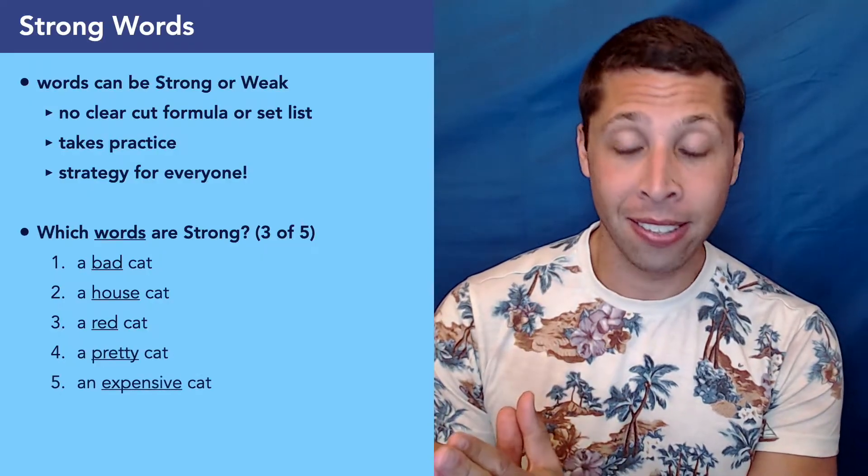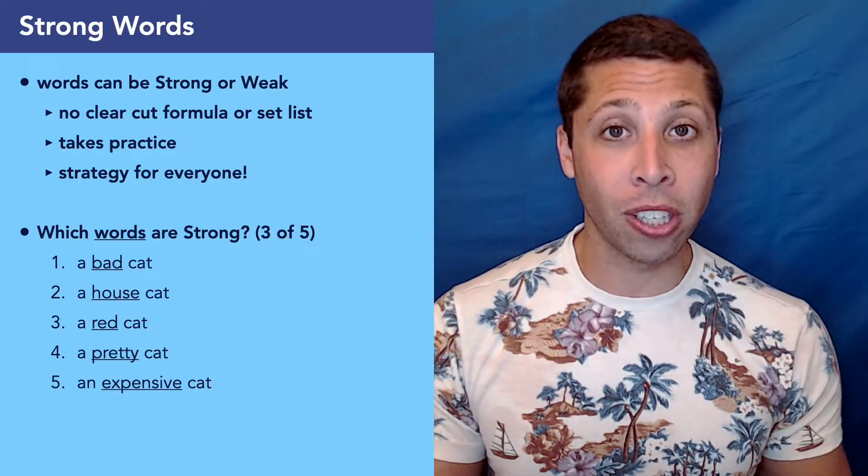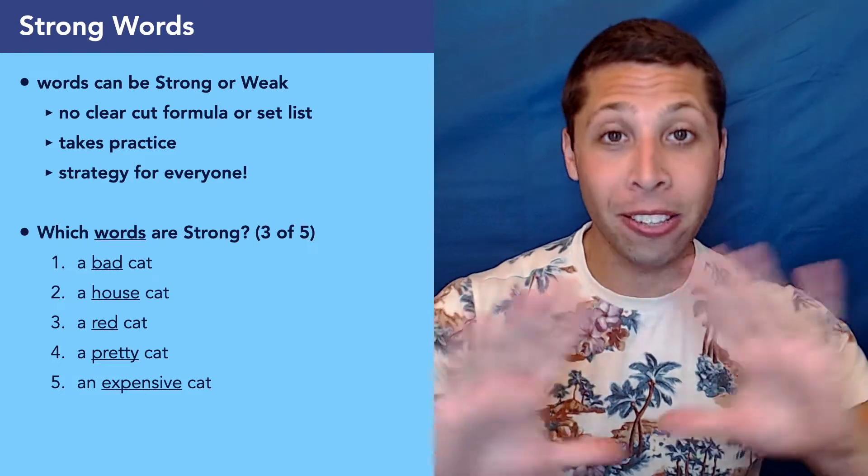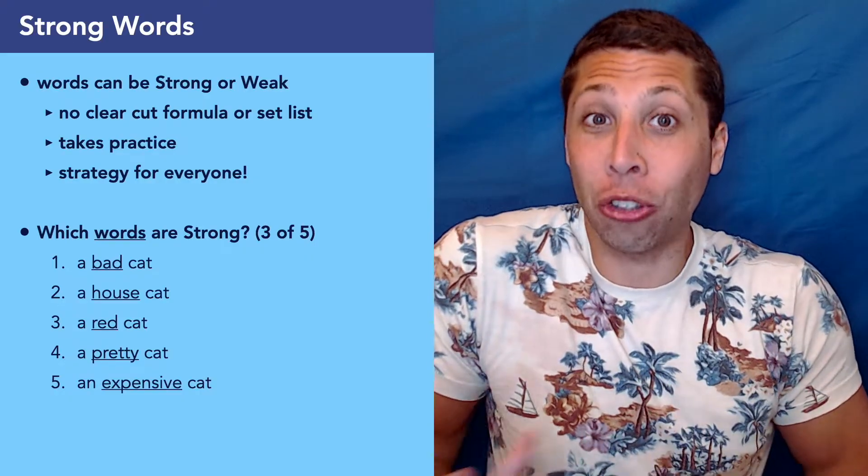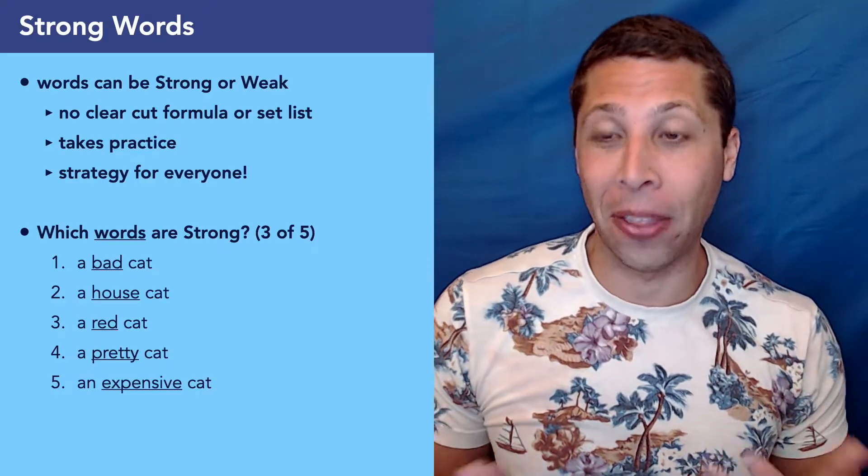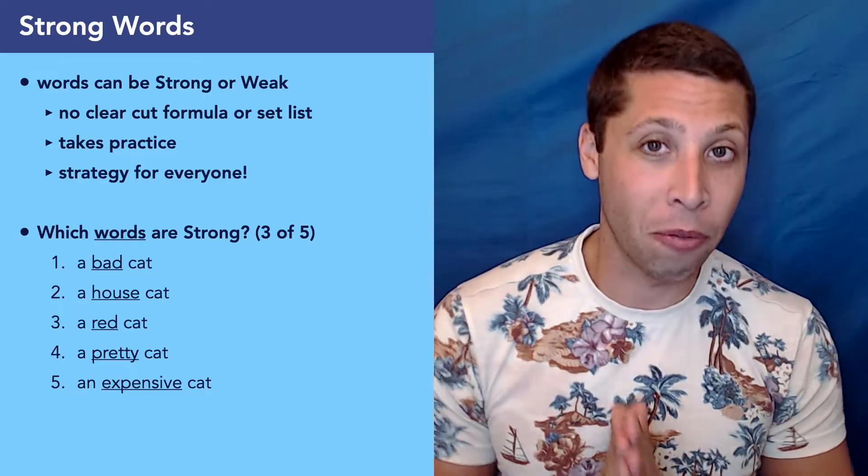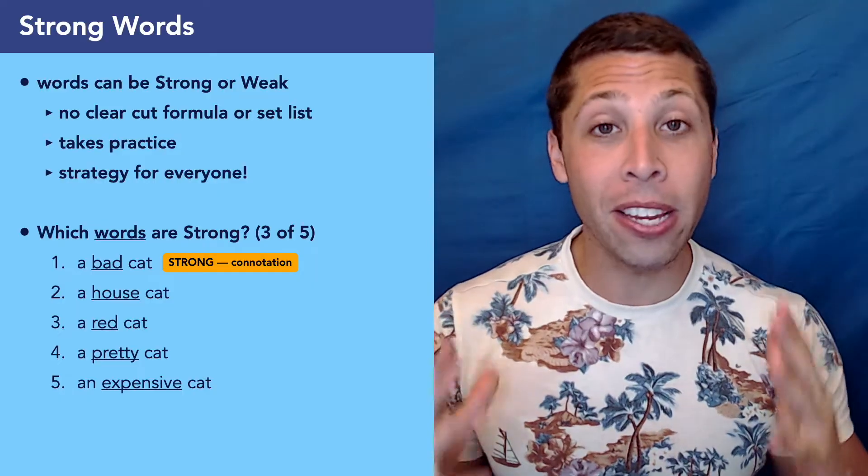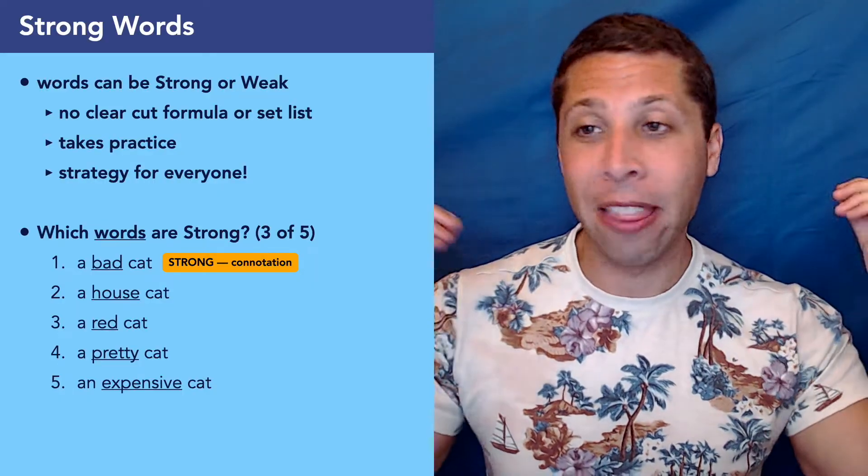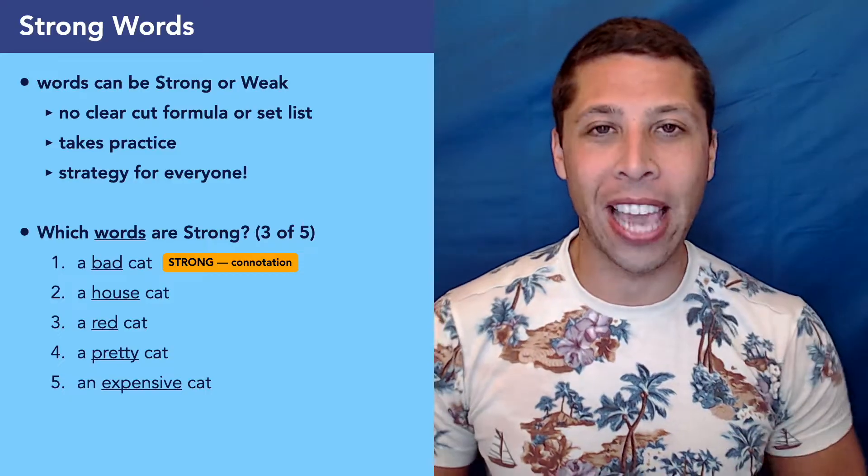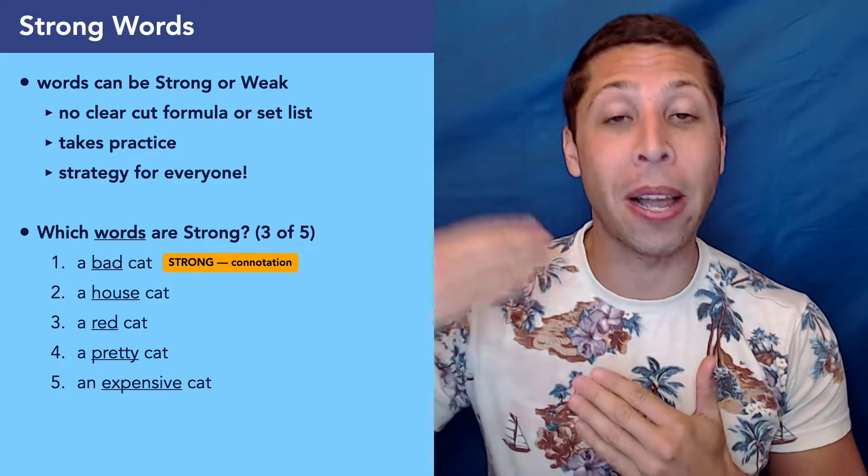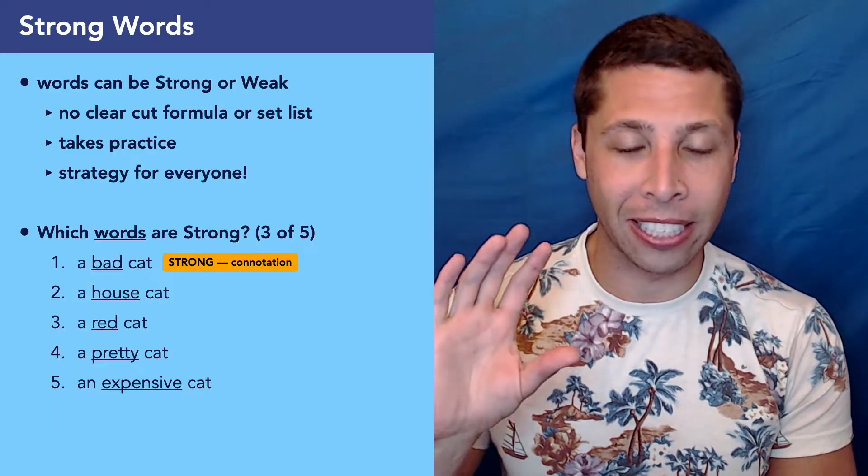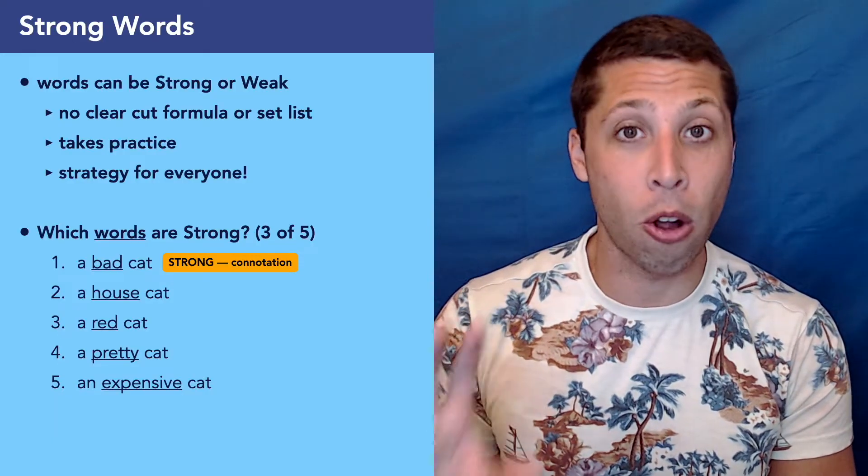If you have a bad score, it's probably because in reading, you're not noticing the strong words in the passage. But even if you're scoring a 700 right now, strong words are probably why you're missing those last few questions. So I'm going to show you in both cases how to start filtering out the strong words from the weak words. In these five cases, try to use your intuition to determine whether the word underlined is strong or weak. Three of these are strong in my opinion. Two of them would be weak. Starting with number one, a bad cat, definitely strong.